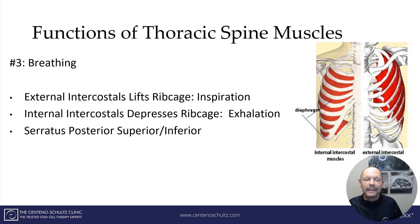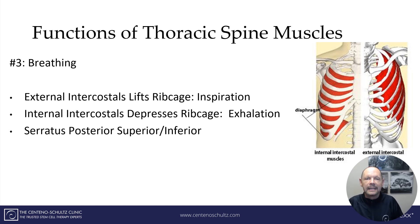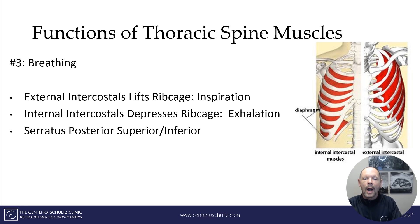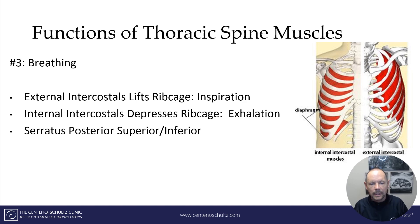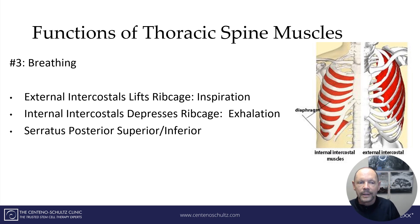The third important function of the thoracic spine muscles is breathing. The external intercostal muscles pull the ribs up, aiding inspiration. The internal intercostals depress the ribs and push air out, helping with exhalation. And then there's the serratus posterior superior and inferior, which also help us breathe.